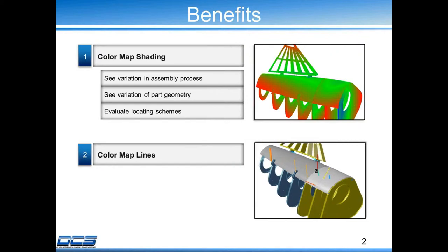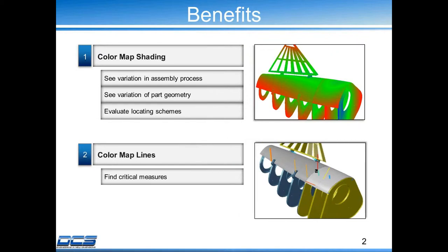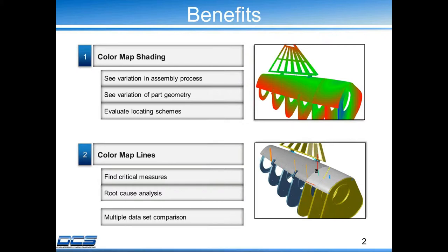We also have color map lines. With color map lines, you can see a visual representation of all your measurements, find the critical measurements, perform some root cause analysis, and also compare multiple data sets so you can find the critical measurements and do some analysis on that too.